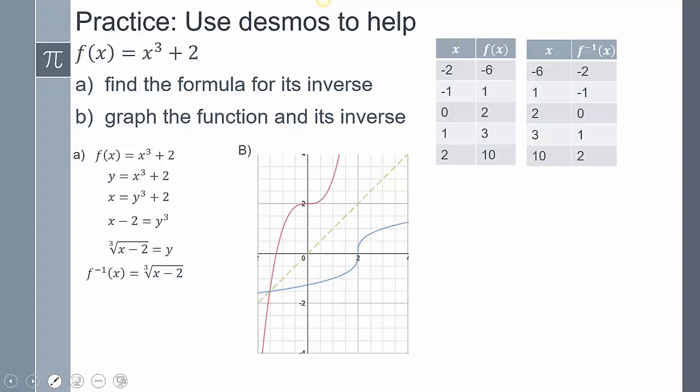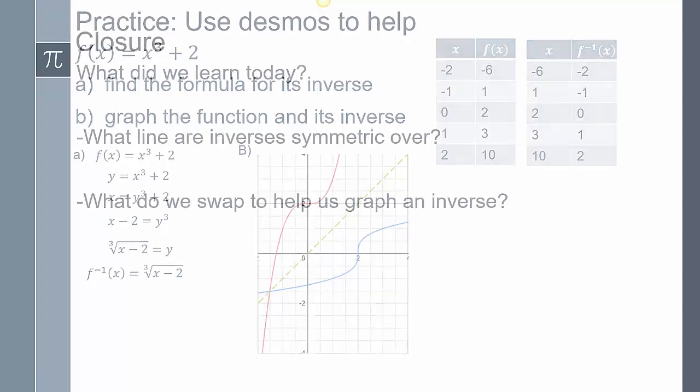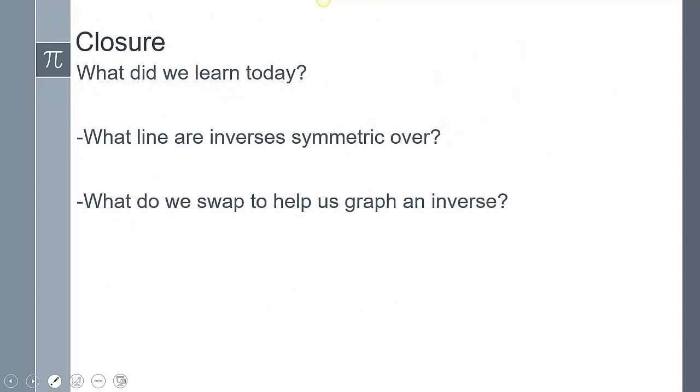So concluding our lesson. What line are inverses symmetric over? They are symmetric over the equation y equals x. What do we swap to help us graph an inverse? We are going to switch the x and y values. Remember, when we find that inverse, you're switching the x and y values. That's part of its definition. This does conclude our lesson. If you have any other questions, leave them in the comments.